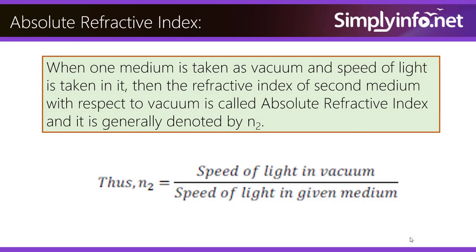Absolute refractive index. When one medium is taken as vacuum and the speed of light is taken in it, then the refractive index of the second medium with respect to vacuum is called absolute refractive index, and it is generally denoted by N2. Thus, N2 is equal to the speed of light in vacuum divided by the speed of light in the given medium.